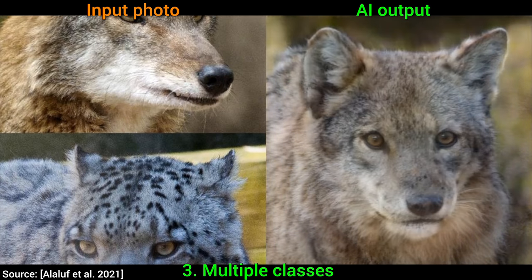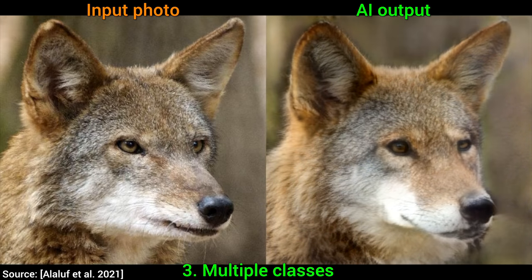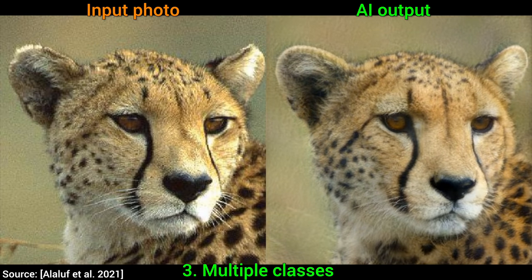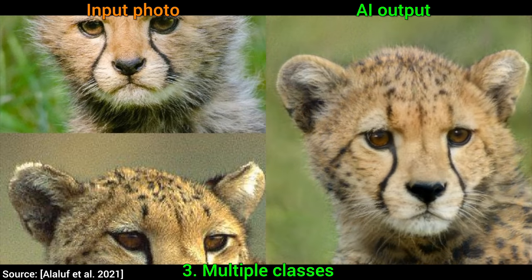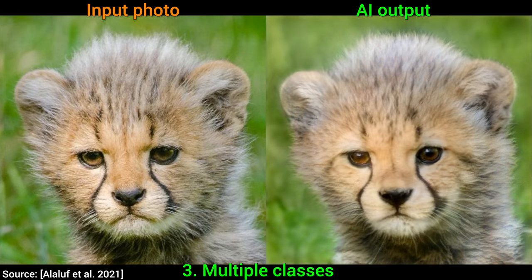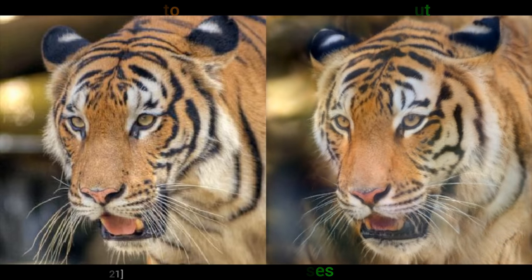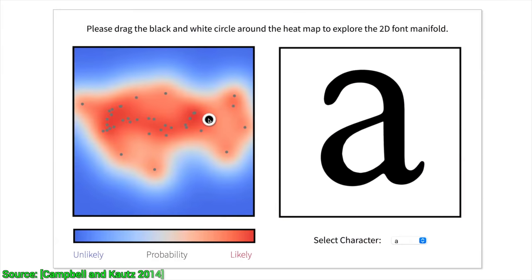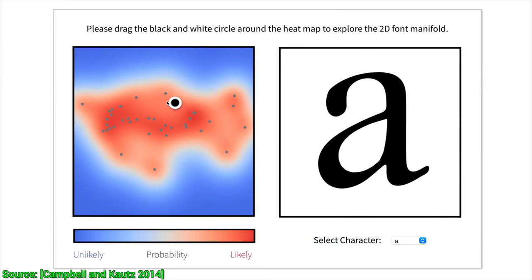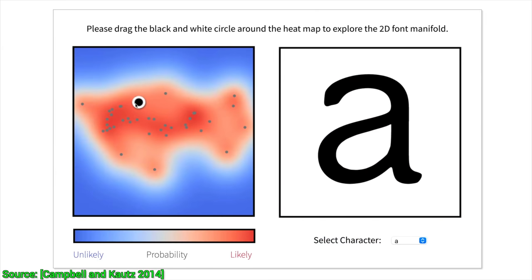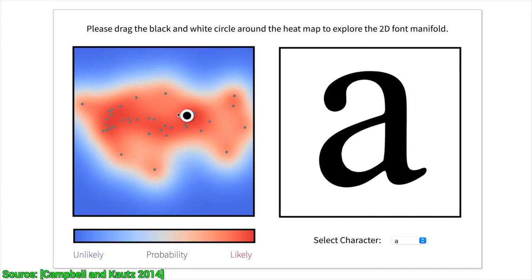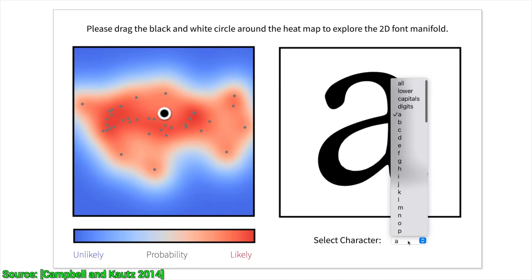Well, we take an image, embed it into a latent space, and in this space we can easily apply modifications. But what is this latent space thing? A latent space is a made-up place where we are trying to organize data in a way that similar things are close to each other.